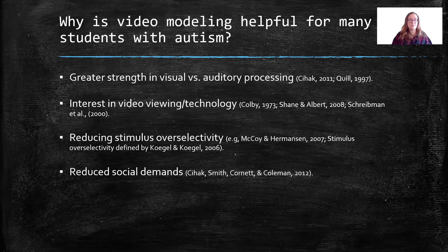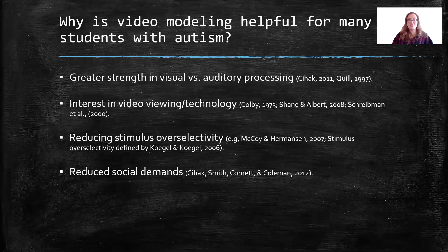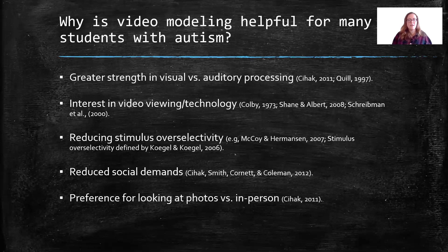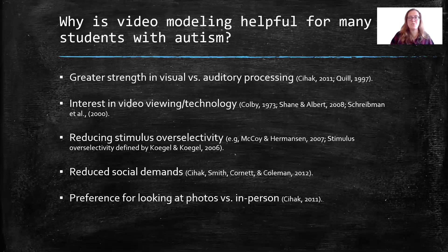Video modeling can also provide reduced social demands for our students. When you're not directly interacting with a person, you don't have to worry as much about social skills and social expectations — you're just watching the video, so you can focus on the learning. There's also research indicating students with autism may have a preference for looking at photographs of people versus in-person interaction, so video modeling may be a preferred learning method for this population.